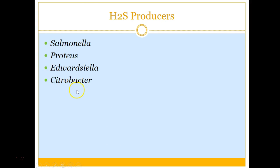The common H2S producers among gram-negative rods are Salmonella, Proteus, Edwardsiella, and Citrobacter. Use this knowledge to help on test questions — if you get a question about a reaction with H2S production, right away you know it has to be one of these four organisms. Look at your answer choices and find which of these four are present, then narrow down from there. Conversely, if given a TSI reaction with no H2S production, you can rule these four out immediately.